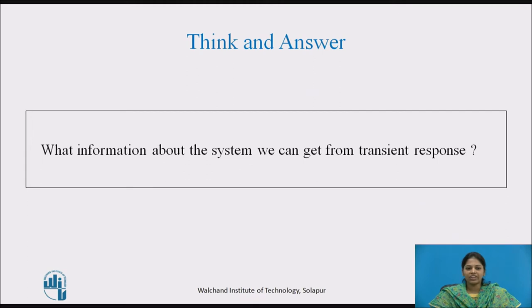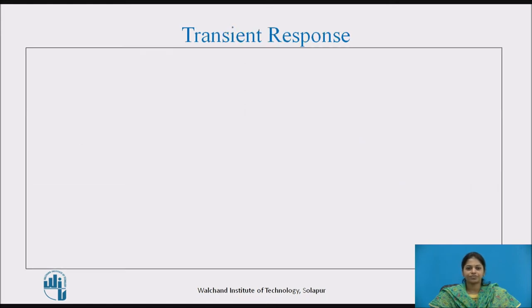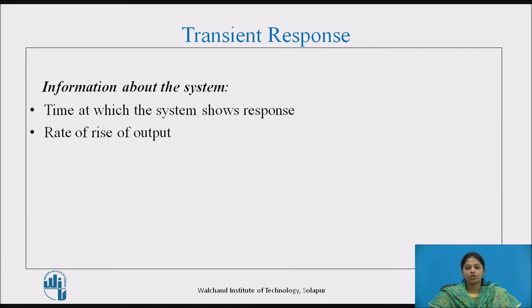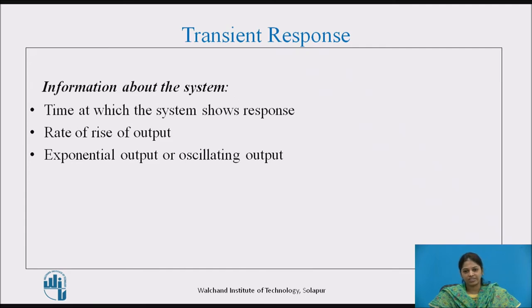Try to think and answer: what information about the system can we get from the transient response? From the transient response, we can get the following information: when the system has started showing its response to the applied excitation; what is the rate of rise of output, which can indicate the speed of the system; whether the output is increasing exponentially or oscillating; if oscillating, whether it is overshooting its final value; what is the settling time and when it is settling down to its final value.